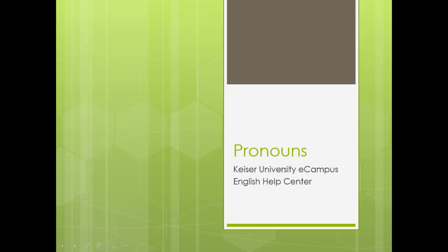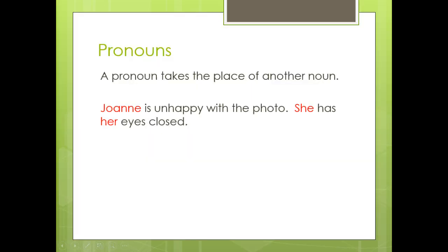This short presentation covers pronoun usage. Pronouns are words that take the place of another noun. For example, Joanne is unhappy with the photo — she has her eyes closed. She takes the place of Joanne, and so does her. If we didn't have pronouns, we would have to say Joanne is unhappy with the photo. Joanne has Joanne's eyes closed. So you can see how pronouns take the place of other nouns in a sentence.